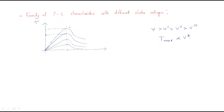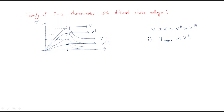For each voltage level — V, V', V'', and V''' — every time the supply decreases, the maximum torque also decreases. So the maximum torque point shifts downward for each successive lower voltage. This means every time the supply voltage is reduced, the maximum torque point changes correspondingly.